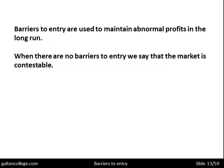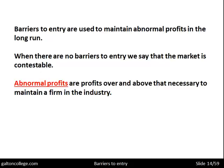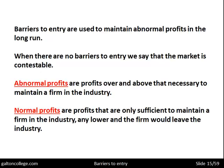If there are barriers to entry, the market is not contestable; if there are no barriers to entry, it is contestable. To reinforce: abnormal profits are profits over and above that necessary to maintain a firm in the industry. Normal profits are only sufficient to maintain the firm in the industry — any lower and the firm would leave. Normal profit is when the firm is just making enough to keep it going.